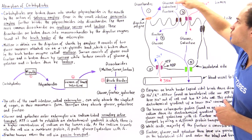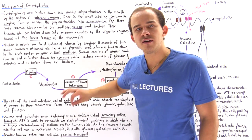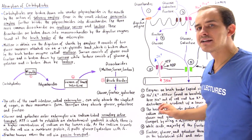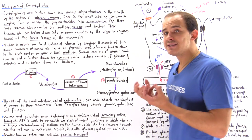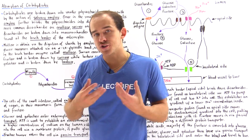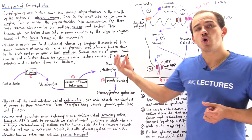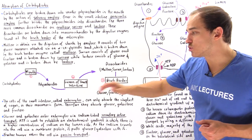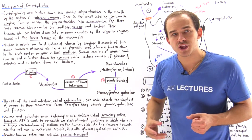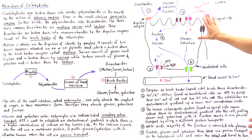Glucose and galactose enter enterocytes via sodium-linked secondary active transport. This means we use ATP to create an electrochemical gradient of sodium, and then as sodium moves down its electrochemical gradient, it moves galactose and glucose along with it.